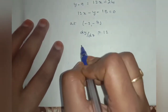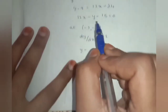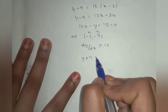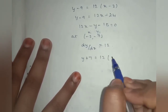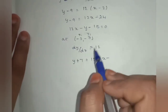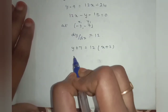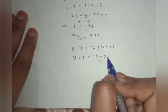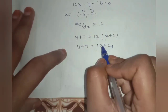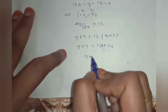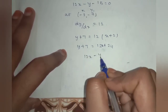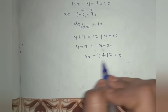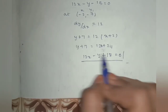For x1 = minus 2, y1 = minus 7, dy/dx = 12: y minus (minus 7) = 12(x minus (minus 2)), so y + 7 = 12x + 24, giving 12x minus y plus 17 = 0.